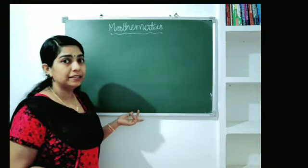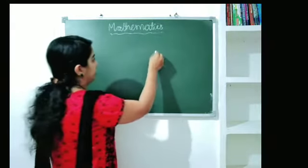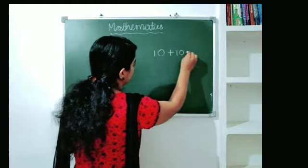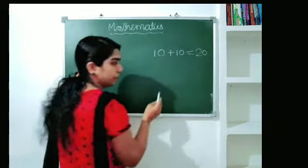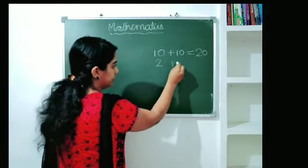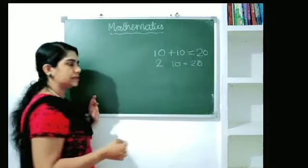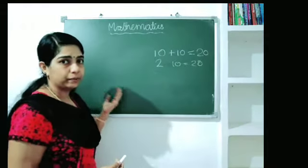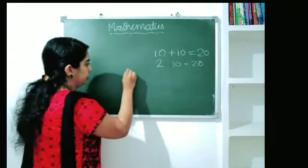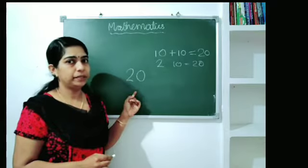Now we have to add 2 two times — we will add 2 times. We have to add 1 to 10: plus one ten is 20. So how many tens is 20? Two tens is 20. We will learn in this class: two tens is 20.